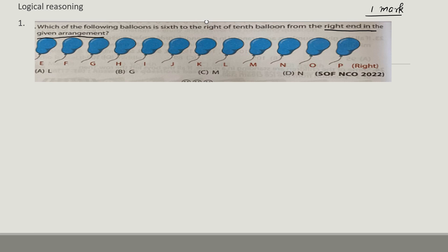So this one is the left end and this is the right end. We have to see from the right end: 10th balloon from the right end. Counting from the right: 1, 2, 3, 4, 5, 6, 7, 8, 9, 10 — so it is balloon G. The 10th balloon from the right end is G.